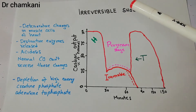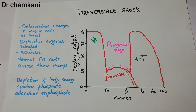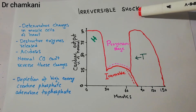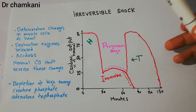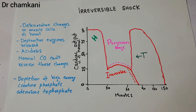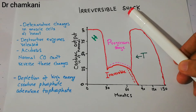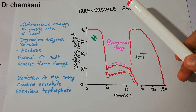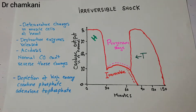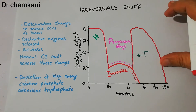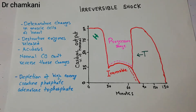This lecture covers the irreversible stage of shock, which is the third stage. So far we have discussed the compensated or non-progressive stage of shock, then the decompensated or progressive stage of shock, and finally the irreversible stage. Shock is a condition in which blood supply or supply of nutrients like oxygen, glucose, and minerals is inadequate to fulfill the demands of all the cells of the different tissues. There are three main stages of shock, and this is the irreversible stage.